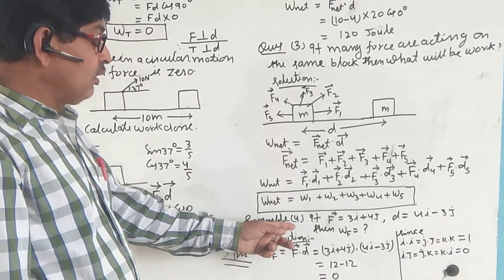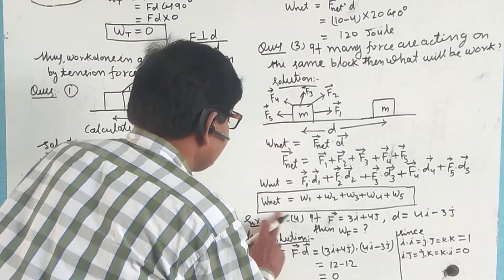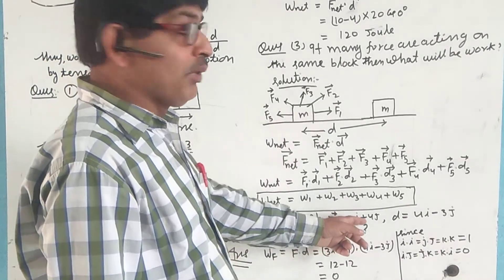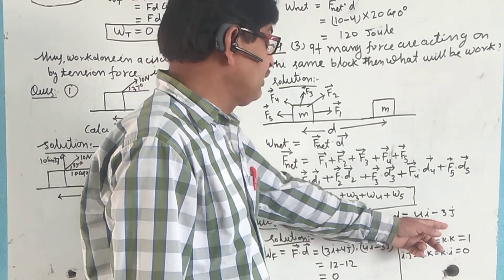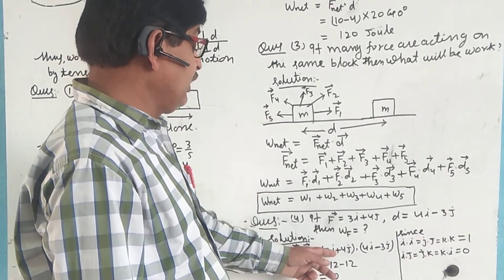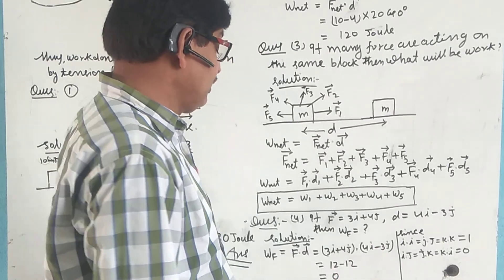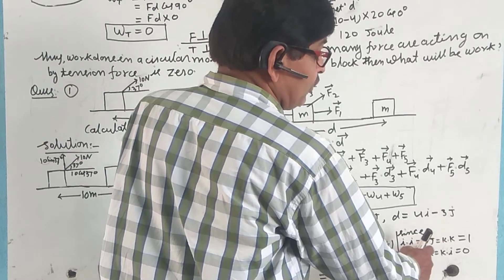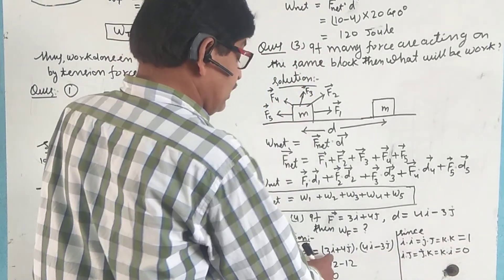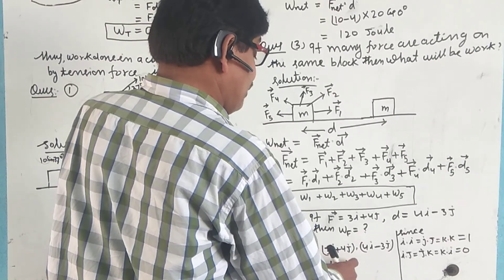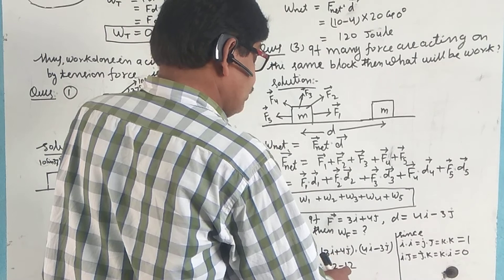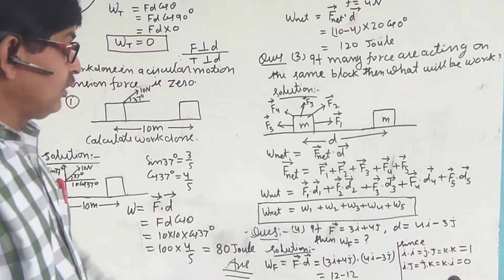Question number 4: calculating dot products using unit vectors. In this case, î · î = 1, ĵ · ĵ = 1, and î · ĵ = 0, ĵ · î = 0. So the calculation gives 12 − 12 = 0. This is the result.